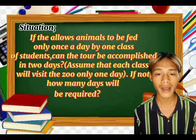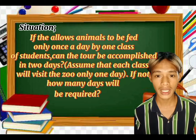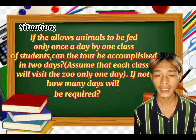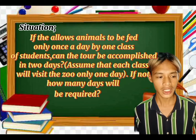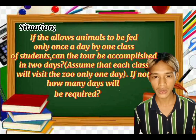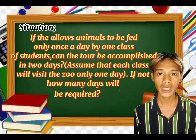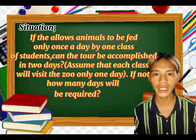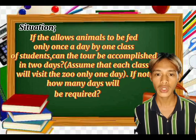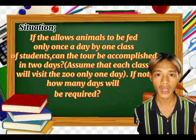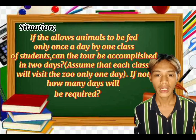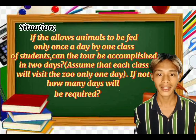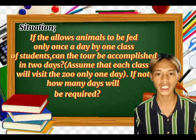Let's assume that each class will visit the zoo only one day. If not, how many days will be required? In this question, we are going to find how many days the students of the elementary school need to feed all the animals they want to feed. So we are going to find the graph coloring and the chromatic number of this given situation.